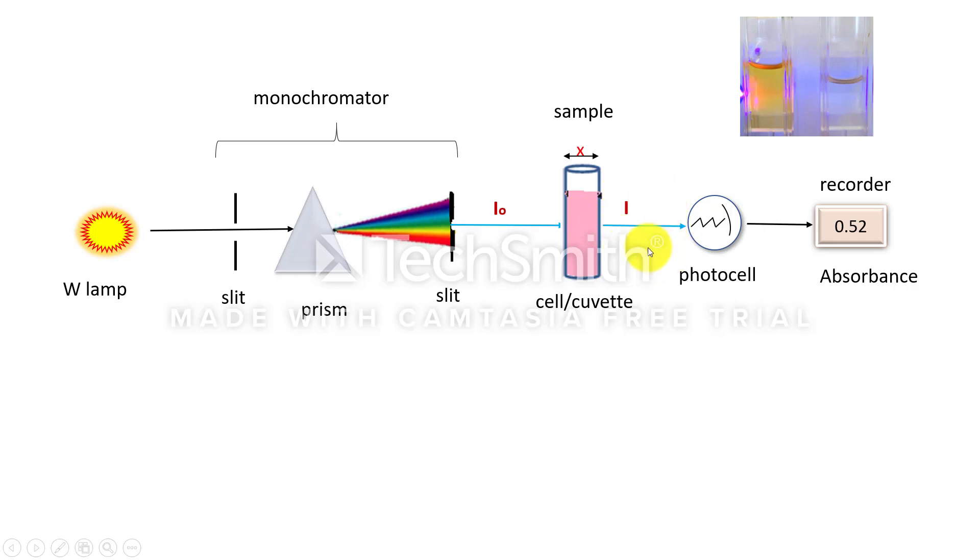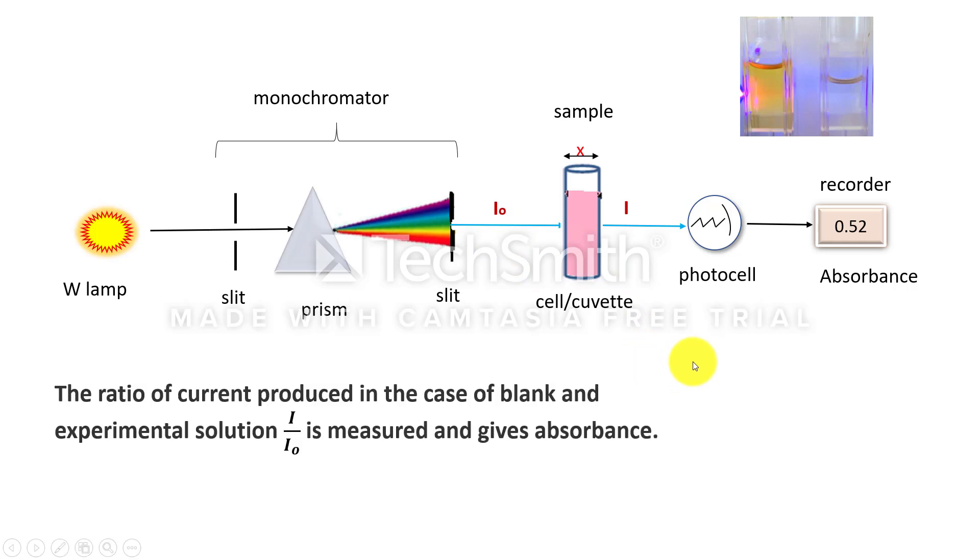the intensity of transmitted light will be lesser than the intensity of incident radiation. Now the ratio of current produced in case of blank and experimental solution will be measured and it is displayed as absorbance in the digital display system.